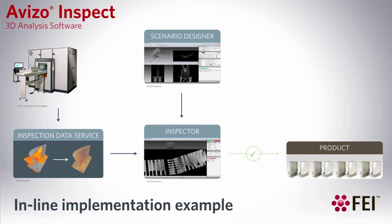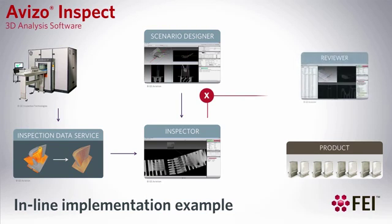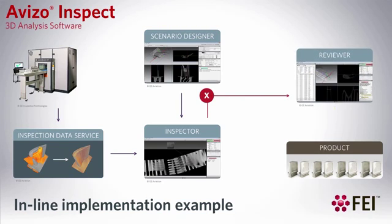Then, a rejected part can be reviewed optionally in a reviewer application, where the inspector can finally accept or reject the part for a final decision.